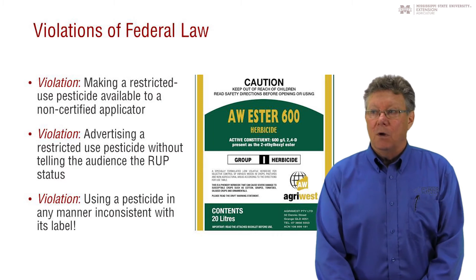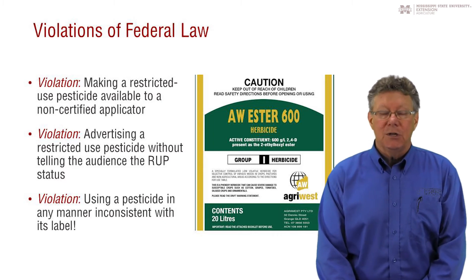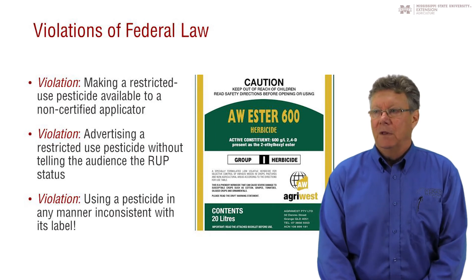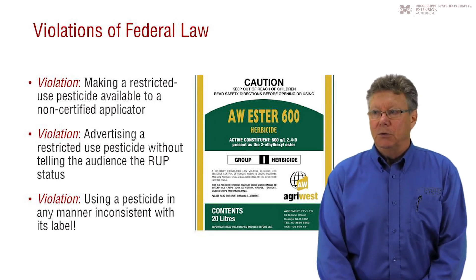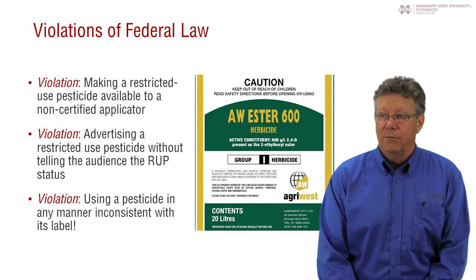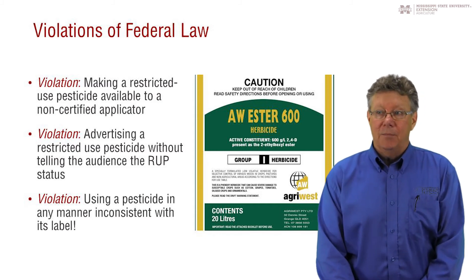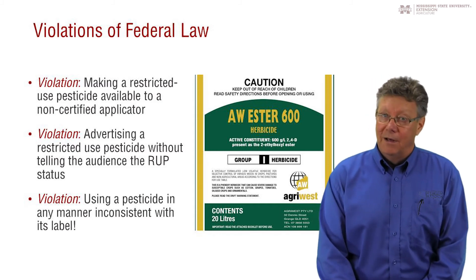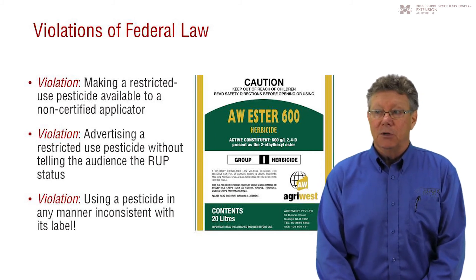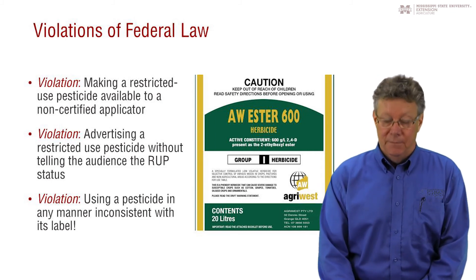It's a violation of federal law to use a pesticide in any manner inconsistent with its label, and it says so right on the label — you can't miss it. This is one violation that is used during most enforcement activities against applicators. Usually, if an applicator has one violation, they typically have several violations of label directions associated with the initial misdeed.